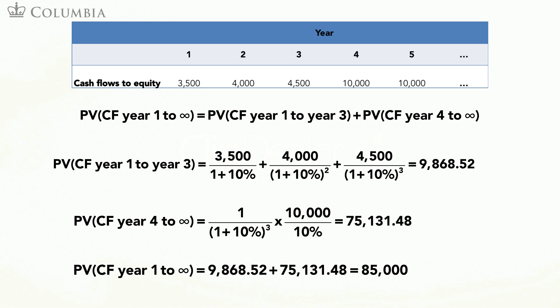Adding the two pieces leads to $85,000. Therefore, the market value of the equity of the firm at year zero is $85,000. We obtain this number by painstakingly computing the cash flows that equity holders receive each period and then discounting these cash flows. The cash flows we computed here are called cash flows to equity, and this approach to equity valuation is called the cash flow to equity method.